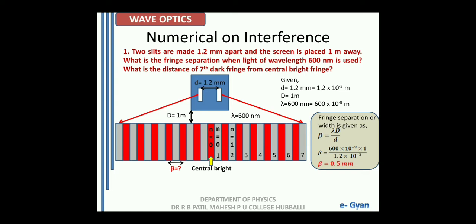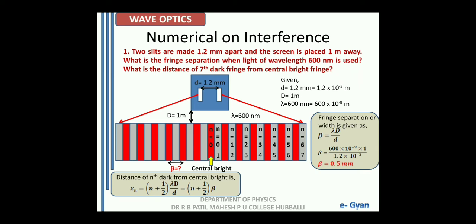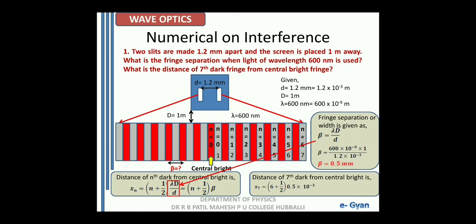For the second dark n = 1, third n = 2, fourth n = 3, fifth n = 4, sixth n = 5, and seventh n = 6. The distance of the nth dark from the central bright is xn = (n + ½) × lambda × D / d = (n + ½) × beta. Hence the distance of the 7th dark fringe from the central bright is x7 = (6 + ½) × 0.5 × 10⁻³ = 3.25 mm.